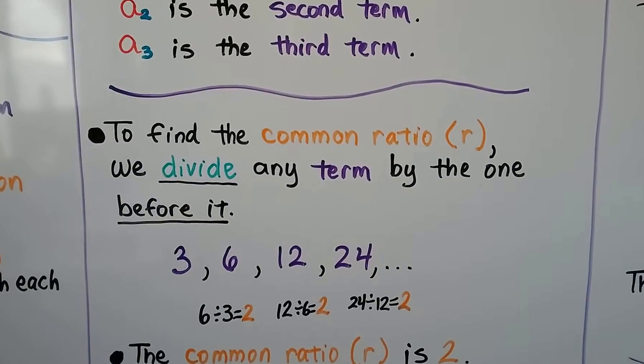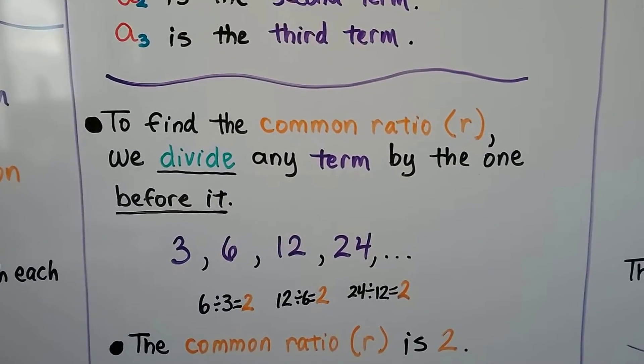To find the common ratio, r, we divide any term by the one before it.